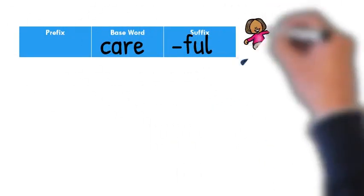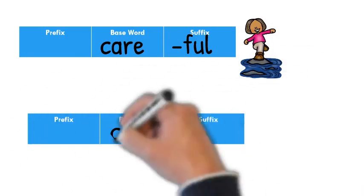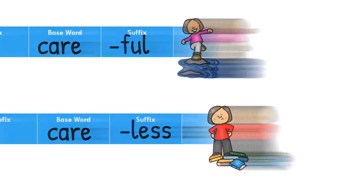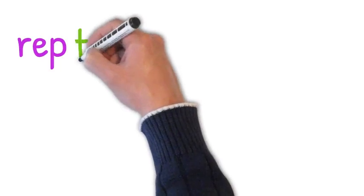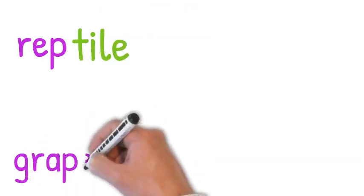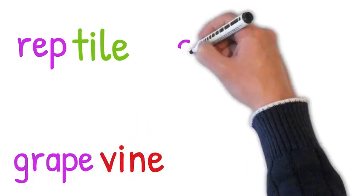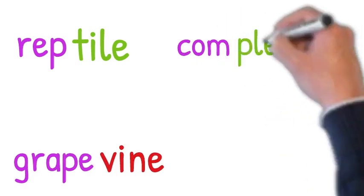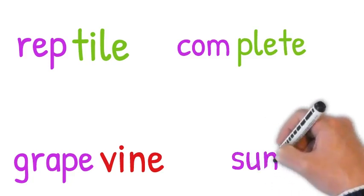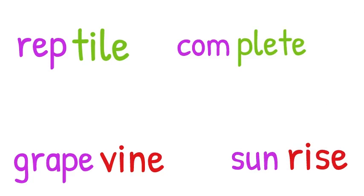Silent E can be in words with more than one syllable. Here we have careful and careless. Let's try to read some two-syllable silent E words. We have reptile, grapevine, complete, and sunrise. Now I have a question for you. Can you tell which two of these words are compound words and which are not? If you said grapevine and sunrise were the compound words, you would be correct.